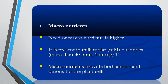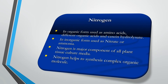Macronutrients provide both anions and cations for the plant cells. In macronutrients, nitrogen is a key type. In organic form it is used as amino acids, different organic acids, and protein hydrolysate. In inorganic form it is used as nitrate or ammonia. Nitrogen is a major component of all plant tissue culture media.